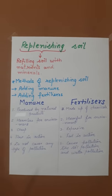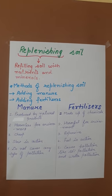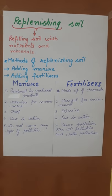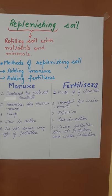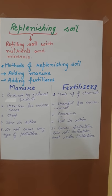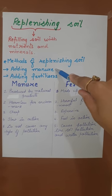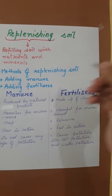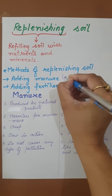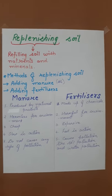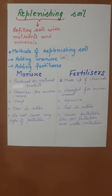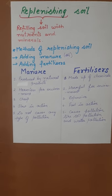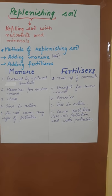If you are not willing to grow pea plants, you can opt for either of two other methods: adding manure or adding fertilizers. Manure — you can say it is 'khad' — is the normal organic material we use. That is manure. And fertilizers are chemical substances.